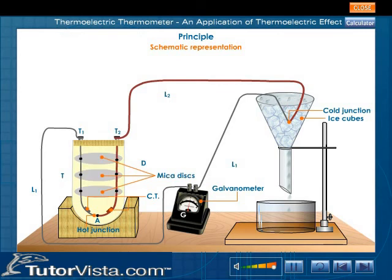These wires are passed through mica discs fitted one above the other in a long porcelain tube T, as shown here. The ends of the two wires are connected to the terminals T1 and T2.